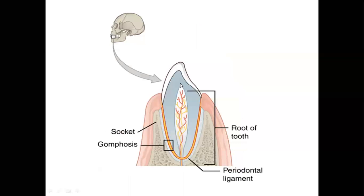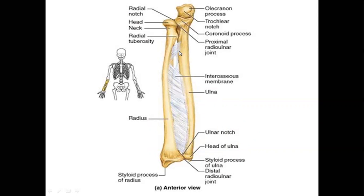The second example of a fibrous joint is gomphosis — this is when teeth are fixed in the mandible in the sockets or gums. The gums are also bone, so this is a connection between two bones, and it is also an immovable fibrous joint. The third example is syndesmosis, which is present between the radius and ulna in the arm, and between the tibia and fibula in the leg. The interosseous membrane combines these two bones together so they will not move apart.